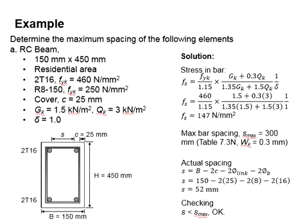If the bar sizes differ, choose the largest spacing. The actual spacing is calculated as s = B - 2c - 2øw - 2ø, which equals 150 - 2(25) - 2(8) - 2(16) = 52 mm.